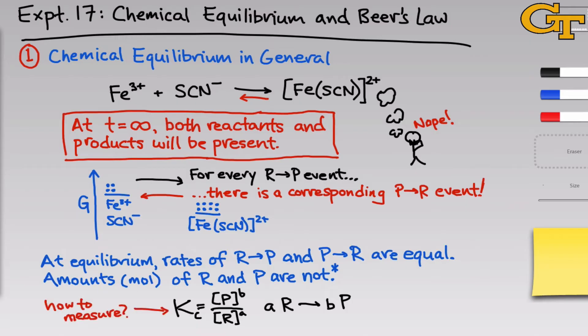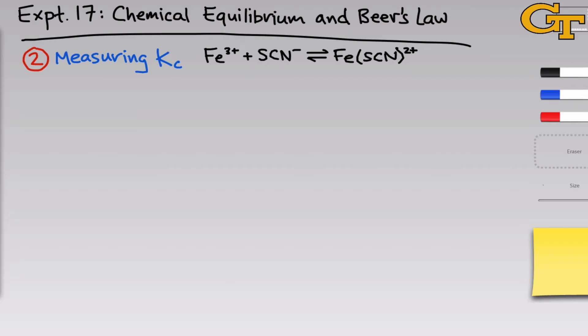A question we have then is, how do we actually measure this? How can we study a chemical reaction to measure Kc so that when another chemist comes along and wants to run this reaction to, say, synthesize the complex for some application, we can say to that chemist, yes, this reaction will work and will go to products, or no, don't even try it, it's not going to move from reactants. In the remainder of this video, we'll explore how to measure Kc.